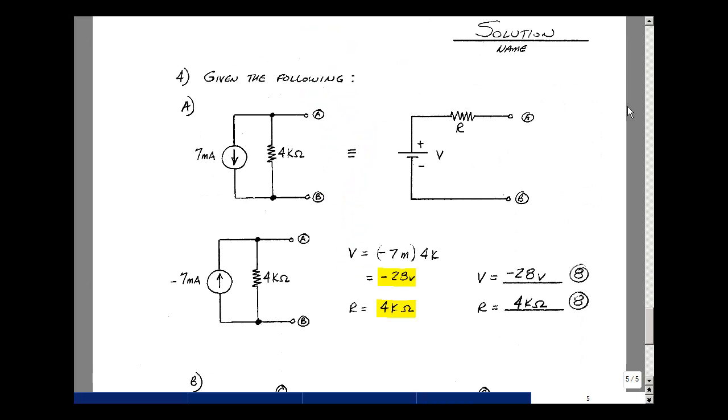Problem number four had two problems on it. Take a look at the first one here. Given this current source in parallel with a resistance, could you express that as a series combination of a voltage V and a resistance R? This is our source transformation, but because of the polarity here, I have to have the current pointing in this direction. So you could rewrite that as minus seven milliamps in parallel with four. Then the source transformation would be to multiply the current times the resistance, and you get minus 28 volts, and then the resistance is the same value of 4k. These are worth eight points apiece, no partial credit.